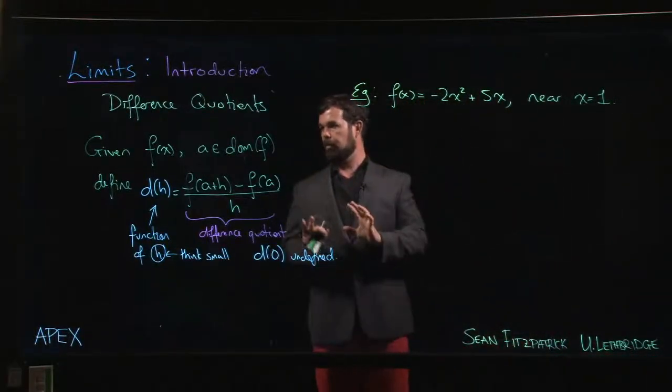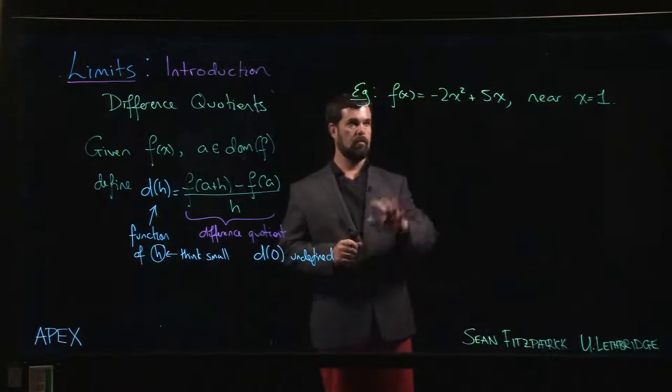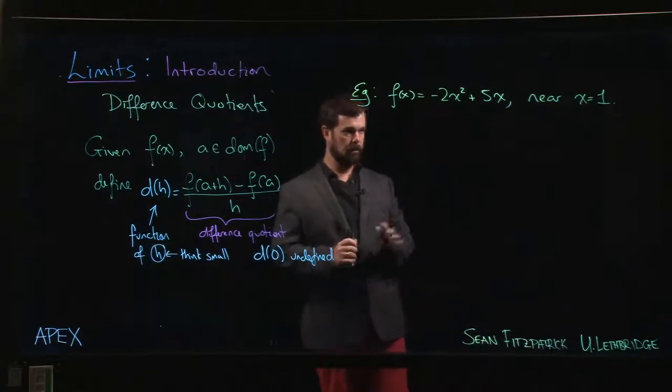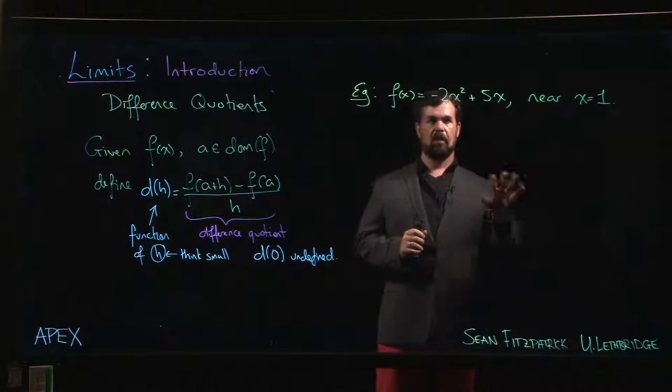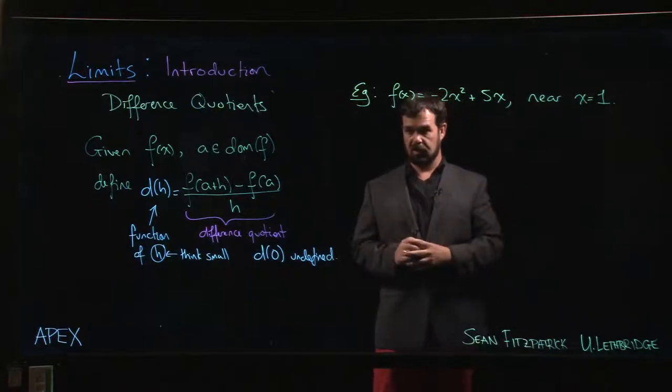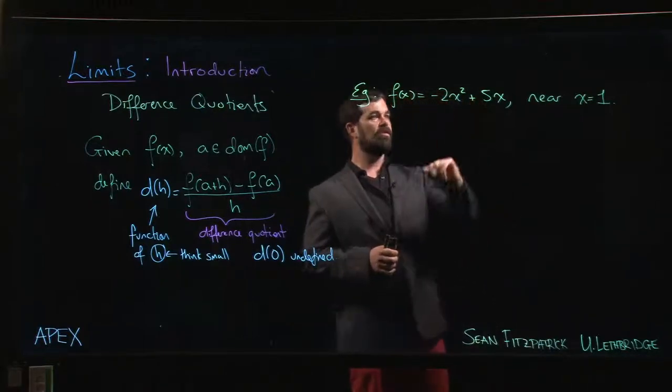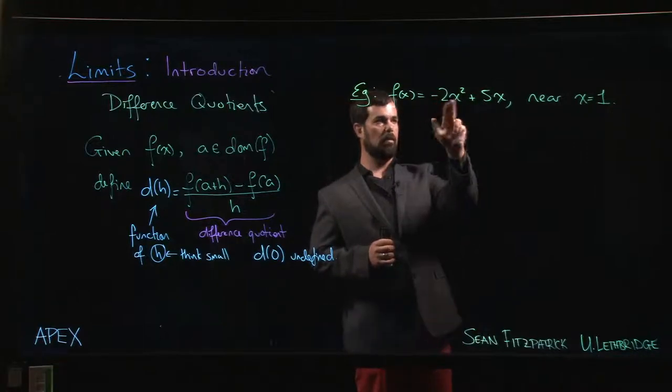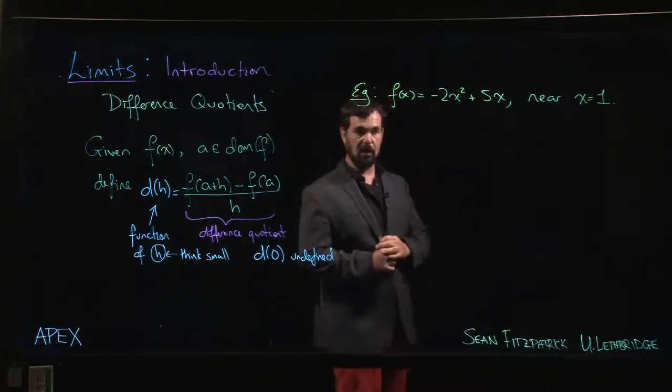Okay, so here's an example where we're going to look at a difference quotient for a function. I've gone with slightly simpler coefficients than the one in the textbook. The textbook has a similar function except I think this is a 1.5 and that maybe is a 10.5 or something like that.